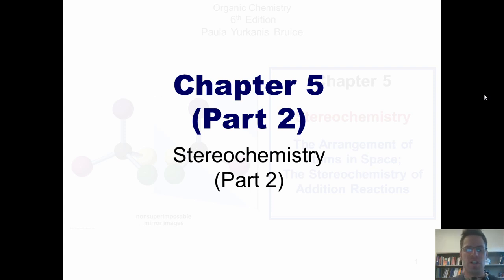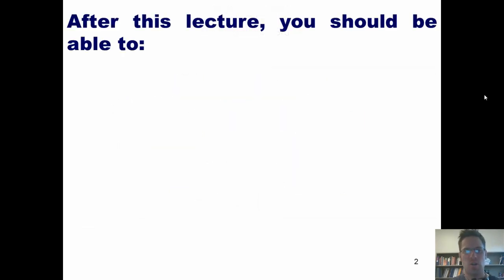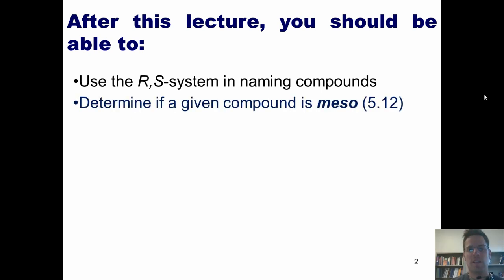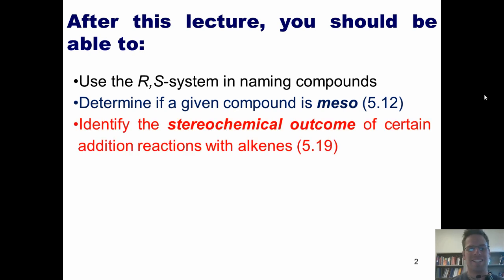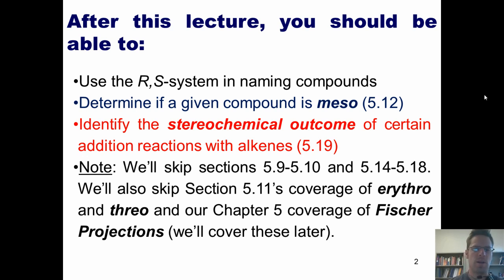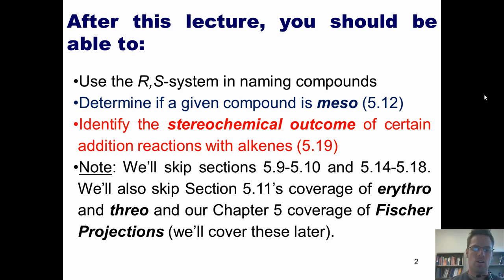We'll now finish our Chapter 5 coverage of stereochemistry with a couple more lecture installments. After today's lecture, you should be able to use the RS system in naming compounds, determine if a given compound is meso, and identify the stereochemical outcome of certain addition reactions with alkenes. We are going to skip Sections 5.9, 5.10, 5.14 through 18, Section 5.11's coverage of erythro, and Chapter 5's coverage of Fischer projections, as we'll be covering those in a later chapter.